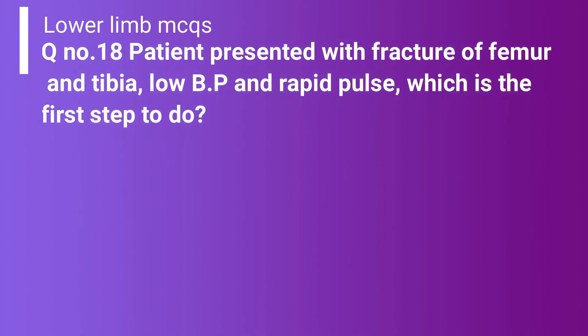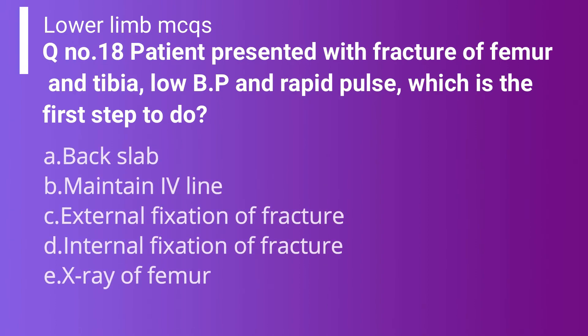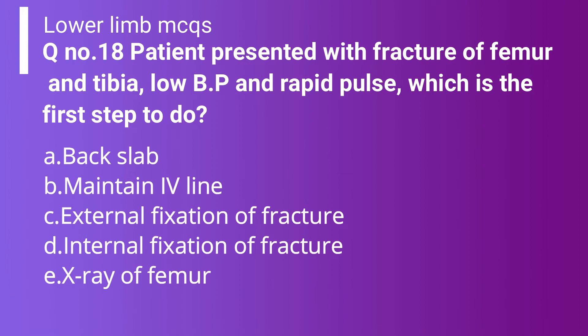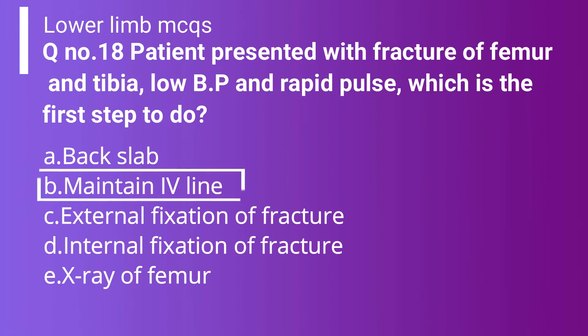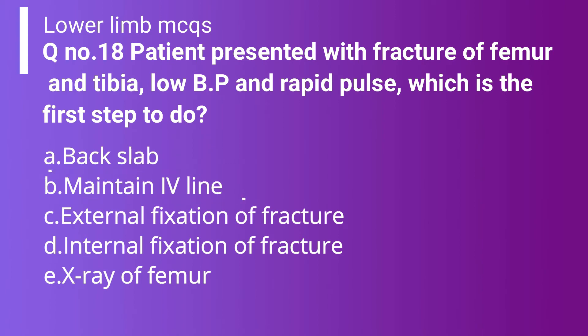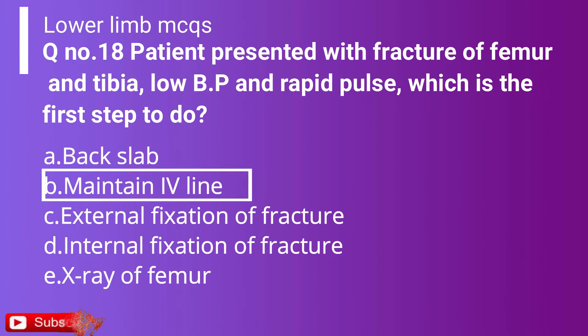Question 18: A patient with fracture of the femur and tibia presents with low blood pressure and rapid pulse. What is the first step to do? Option A: Back slab. Option B: Maintain IV line. Option C: External fixation of the fracture. Option D: Internal fixation of the fracture. Option E: X-ray of the femur. The correct answer is Option B — maintain IV line — because the patient is in shock and we must establish IV access first. The rest of the options are secondary.